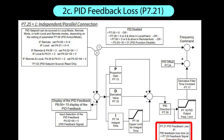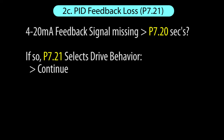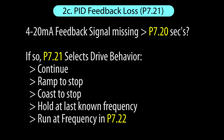Parameter 721 determines what the drive should do if it loses a 4 to 20 milliamp feedback signal. When the drive sees that there's no current flowing for a period longer than the time in parameter 720, then it can continue, ramp to a stop, coast to a stop, operate at the last known frequency, or issue a warning and run at whatever frequency you put in parameter 722. This feature is turned off if parameter 720 is zero, and of course it doesn't work on voltage inputs.